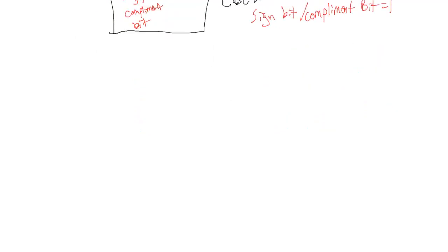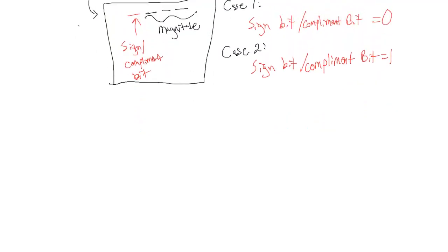So let's break it down. Let's say case 1. We're going to call this the S/C, sign complement bit, is equal to 0. So let's make up a number. Let's say this is 0, and then let's say it's 1, 0, 0. Example case.